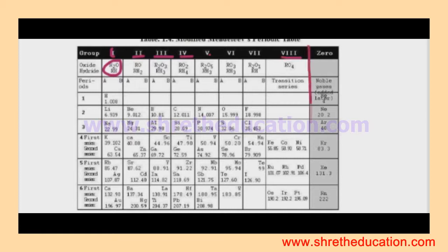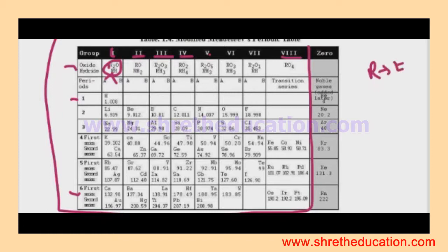Elements are arranged one by one after every sixth element. Group one elements form oxides. Group one has subgroups A and B. Elements in group one subgroup A are called representative elements. Any element in group one is a representative element.